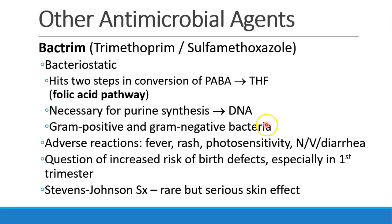Bactrim, which is a combination of trimethoprim and sulfamethoxazole, is a bacteriostatic drug which affects two subsequent steps in the conversion of para-aminobenzoic acid to tetrahydrofolic acid. This is the folic acid pathway, which is necessary for purine synthesis in order to make DNA. These drugs are effective against gram-positive and gram-negative bacteria. Adverse reactions include fever, rash, photosensitivity, and GI upset.